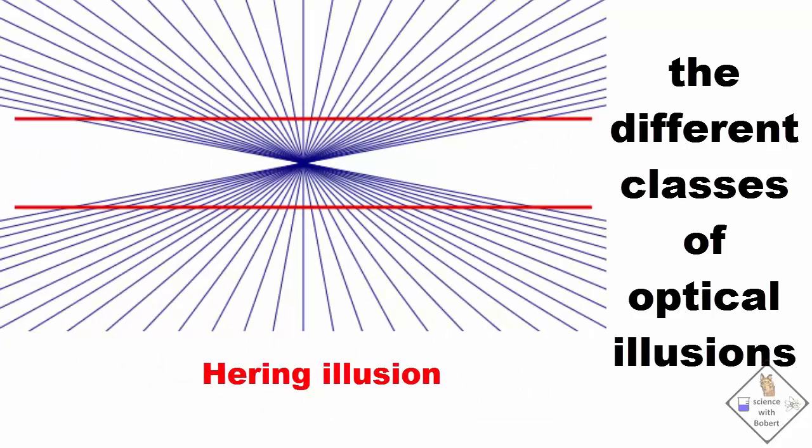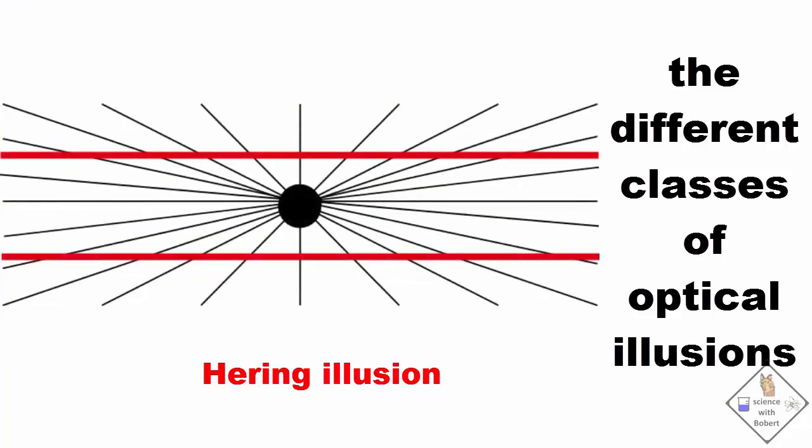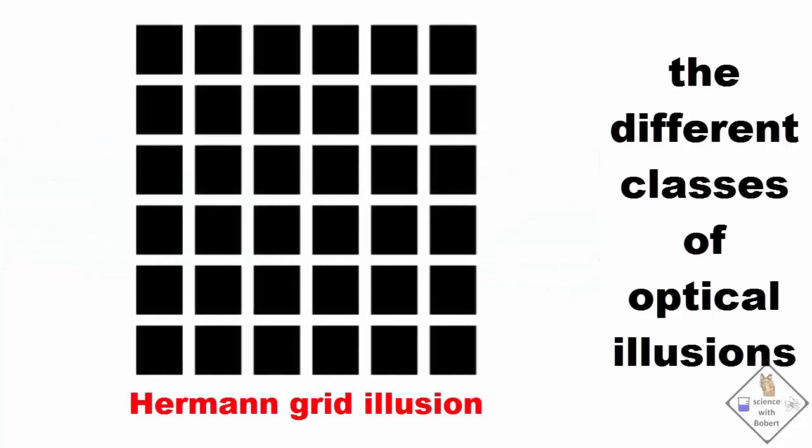This is a Herring illusion. The two red parallel lines appear to be bent even though they are perfectly straight. This is also a bending parallel lines illusion, so it is also classified as a Herring illusion. This is a Hermann grid illusion. The small grayish dots at the intersections are actually not there. Our brain puts them there. The phantom dots disappear though if you look directly at them.